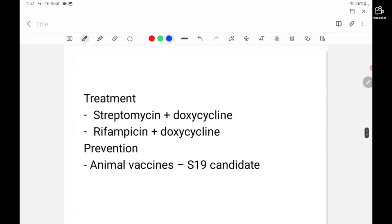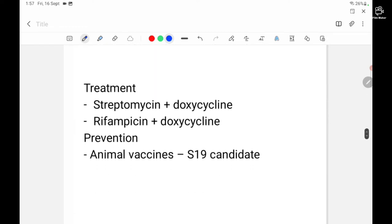For treatment of brucellosis, the general regimen is streptomycin plus doxycycline or rifampicin plus doxycycline. One tetracycline is always used, and this is prescribed for six weeks. It's a long therapy.